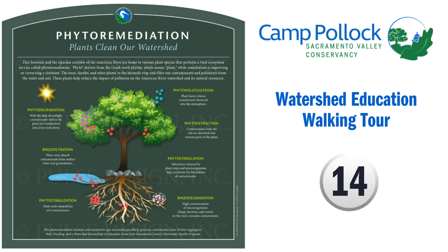Sacramento Valley Conservancy presents: Phytoremediation — Plants Clean Our Watershed. This bioswale and the riparian corridor of the American River are home to various plant species that perform a vital ecosystem service called phytoremediation. 'Phyto' derives from the Greek word 'phyten,' meaning plant, while remediation means improving or correcting a situation. The trees, shrubs, and other plants in the bioswale trap and filter out contaminants and pollutants from the water and soil.